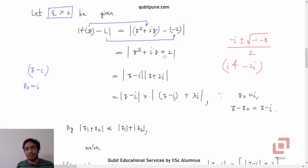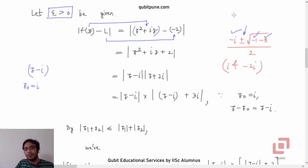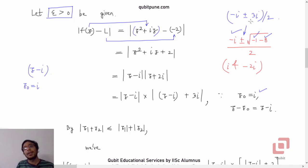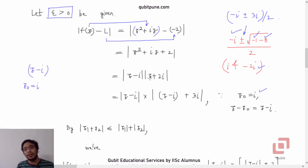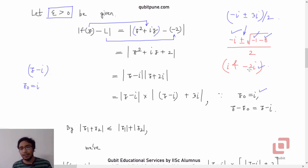We get z² + iz + 2. Solving the quadratic equation by the formula, we get the roots as (−b ± √(b² − 4ac)) / 2, which gives −i ± 3i, divided by 2 — giving roots i and −2i. This helps us obtain the factors: (z − i)(z + 2i). Using properties of the absolute value, we can write it as |z − i| · |z + 2i|. Now we have the factor (z − i); we would also like it in the second part, so we write |z − i + 3i|.